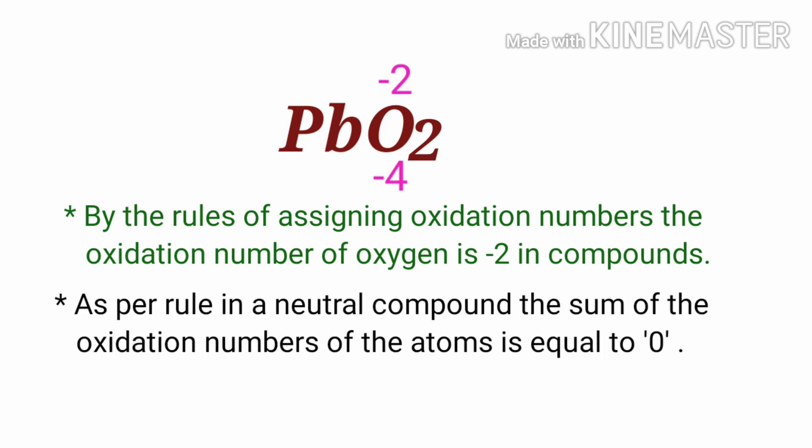As per rule, in a neutral compound, the sum of the oxidation numbers of the atoms is equal to 0. So the numbers along the bottom must add up to 0.